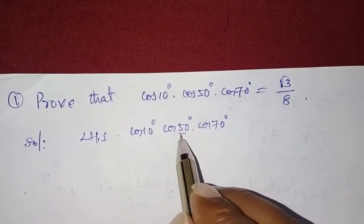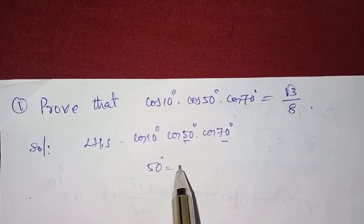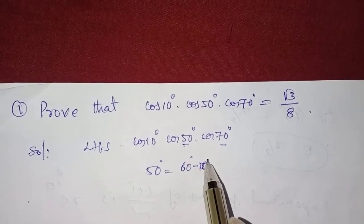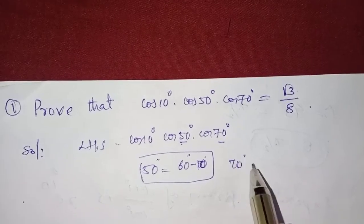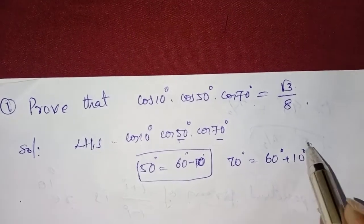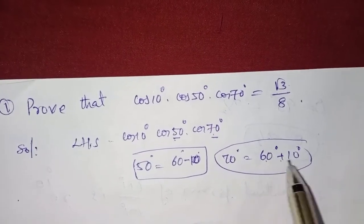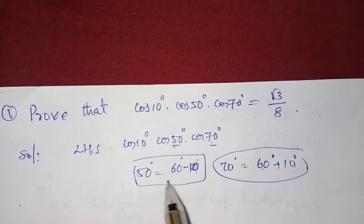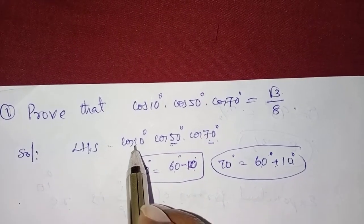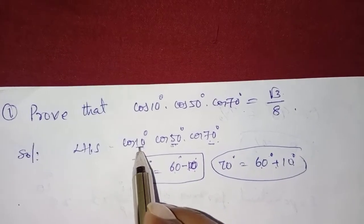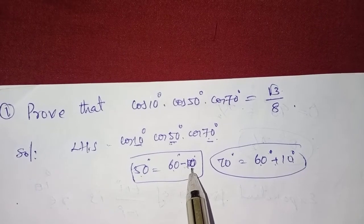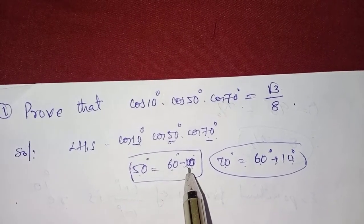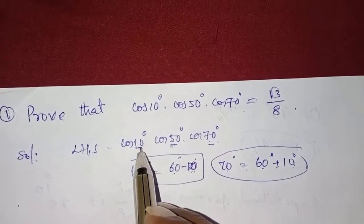Here 50 degrees we can write as 60 minus 10 degrees, and 70 degrees is 60 plus 10 degrees. These 50 and 70 depend upon the first angle, which is 10 degrees. So 50 equals 60 minus 10 and 70 equals 60 plus 10. For example, if we had 20 degrees, we would write 60 minus 20 and 60 plus 20.